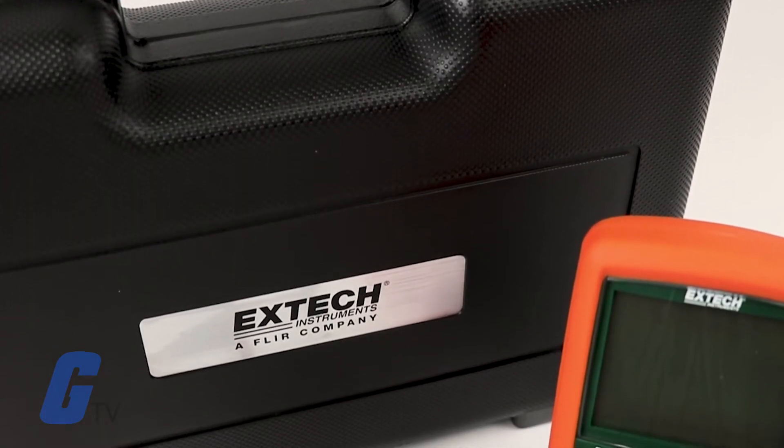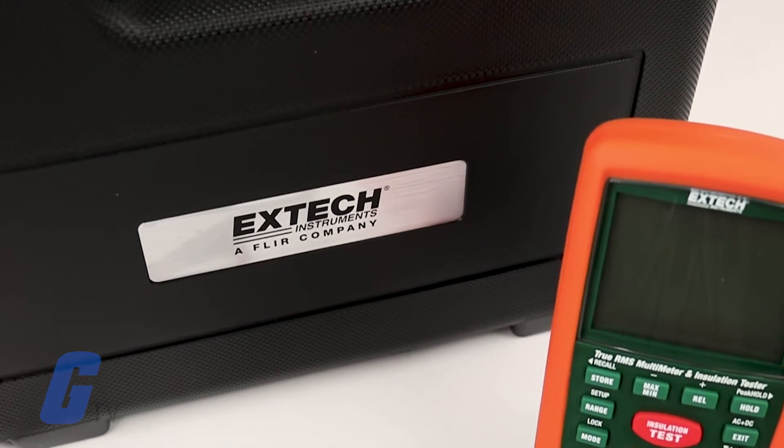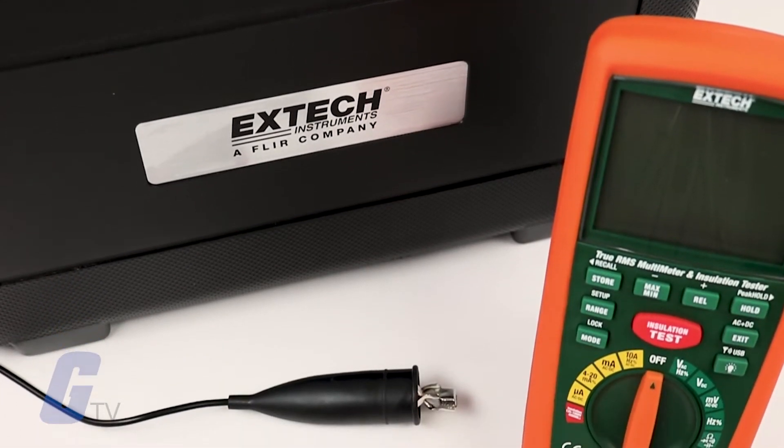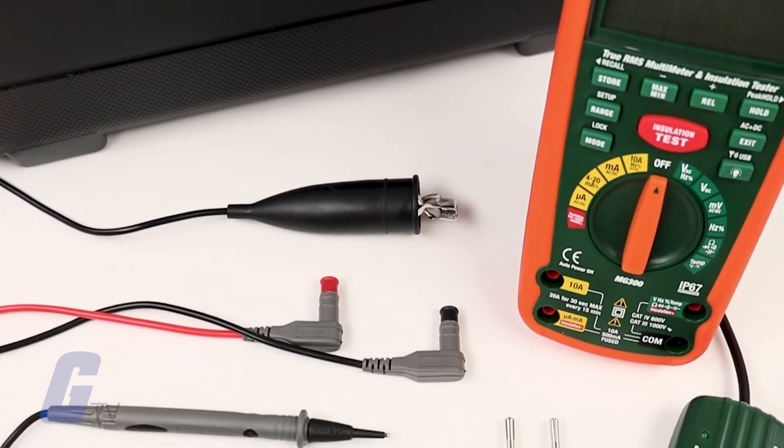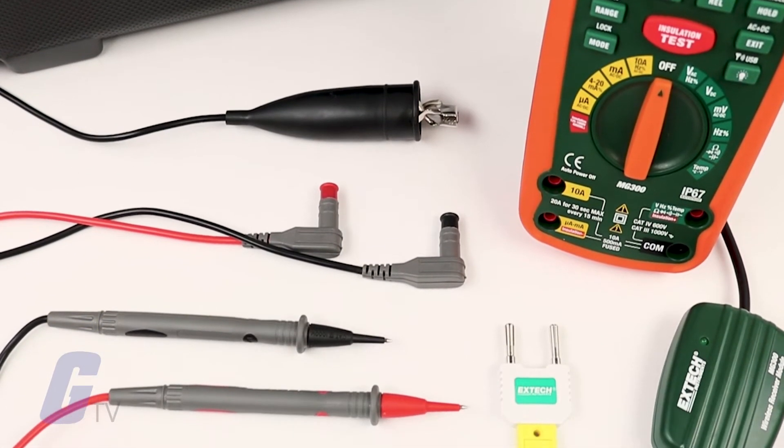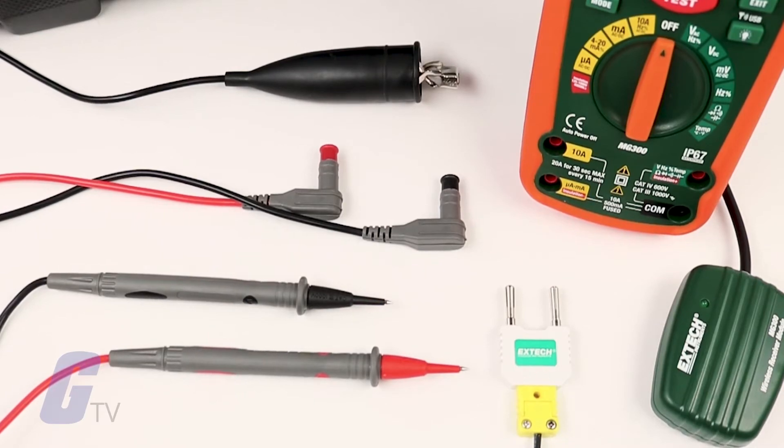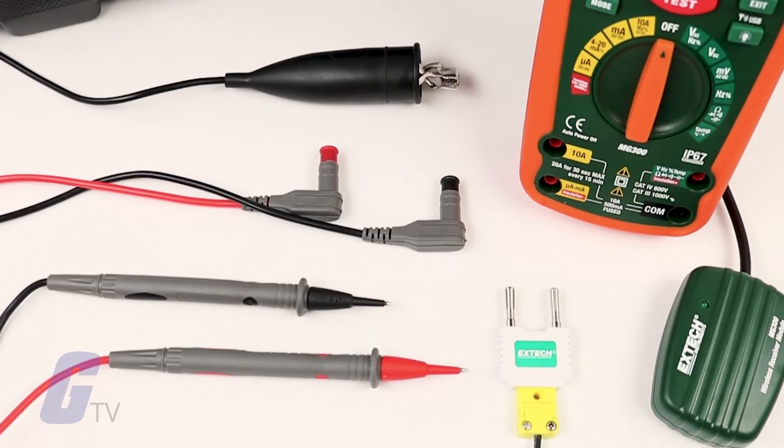Also included are a remote receiver with a USB cable, Windows-compatible software, heavy-duty test leads, alligator clip test leads, a Type-K bead wire temperature probe with an adapter, a carrying case, and six AA batteries.